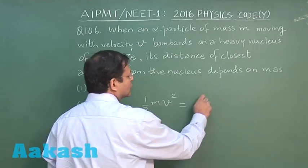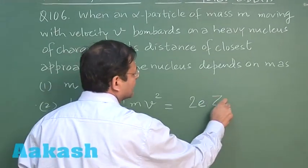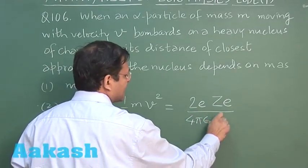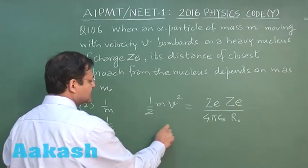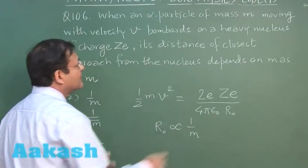So let us suppose the potential energy expression is to be taken, it will be q1 q2 by 4 pi epsilon naught r, isn't it. So q1 if I take of alpha, I am writing as 2e, and the q2 that of nucleus, it is ze upon 4 pi epsilon naught r naught. r naught is the closest distance of approach. So you can clearly see this closest distance of approach will become directly proportional to what, this is 1 by m.